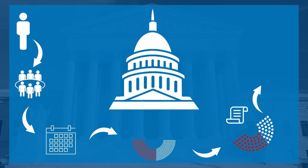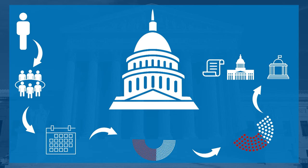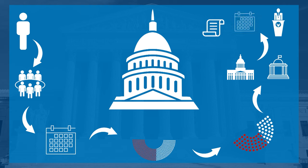Lastly, a committee consisting of House and Senate members rectifies any differences between the House and Senate versions of the bill before sending it to both chambers for final approval. The president has 10 days to sign or veto the completed bill. Much of the actual work of Congress is done in the committees and subcommittees — there are some 200 of them.